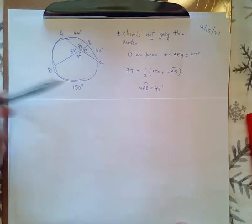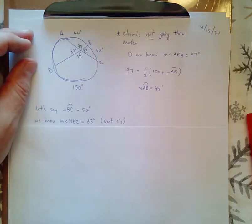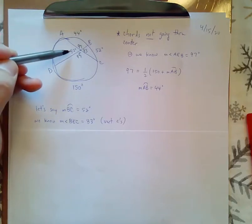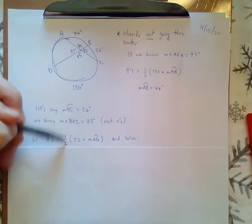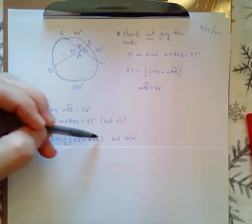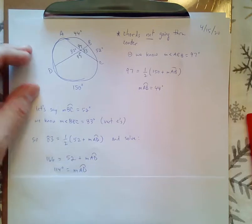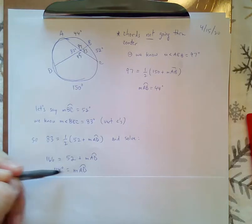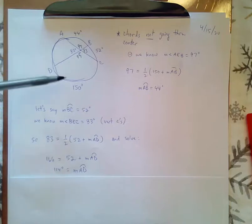And then, you can subtract from 360 if you want to find the arc AD, but you can also use the same formula with the 83-degree angle. The 83-degree angle is going to be one-half of the two arcs. So, in this case, I know it's 52, and I don't know the measure of arc AD. Multiply both sides by 2 and subtract, and I will get that the arc is 114 degrees.